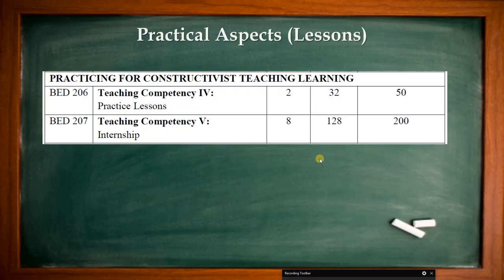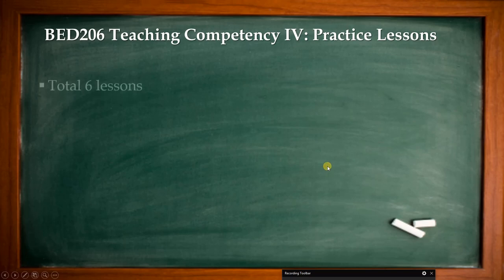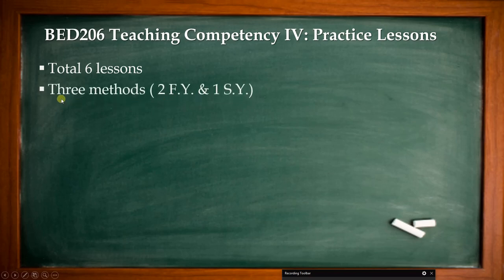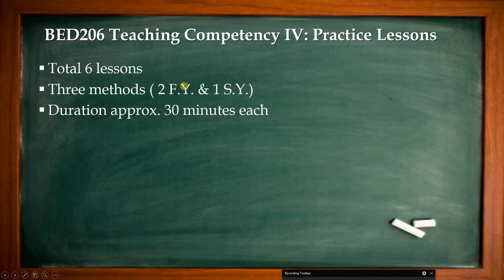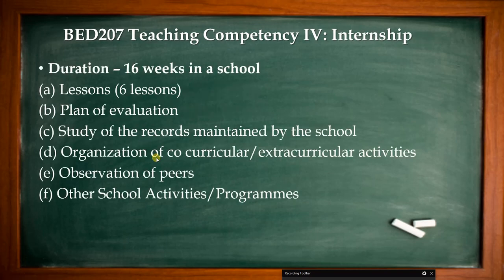Apart from theory papers, let us see the practicals to be performed. BAD 206 is about teaching competencies and practice lessons, and BAD 207 is internship. For BAD 206, there are 6 practice lessons in the school. You have 3 methods — 2 from first year and 1 from second year — so 2 lessons each for the methods. The duration of each lesson should be 30 minutes and these lessons should be conducted in schools.